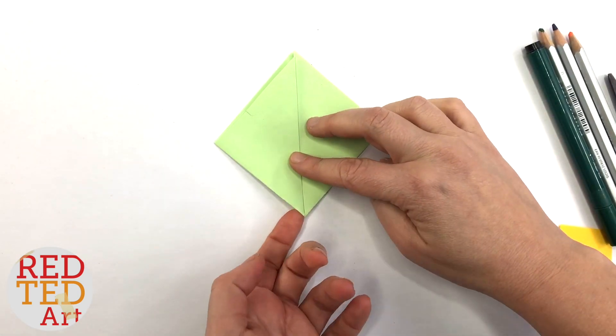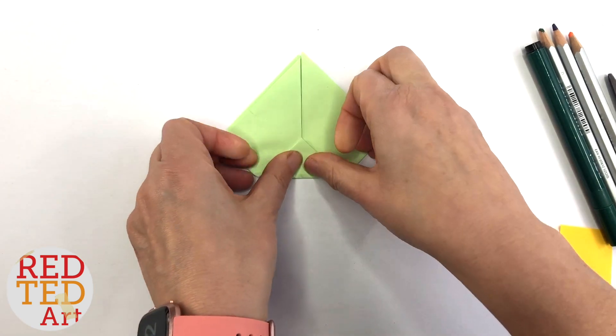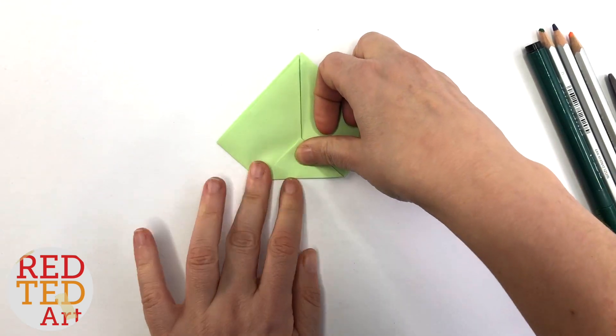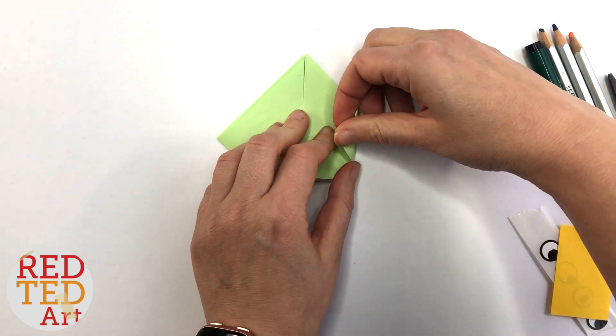Fold up the bottom. This is going to be its little stand, and we're going to glue some feet to it, but you don't have to if you don't want to. Fold in the sides—these are going to be the little wings. Doesn't have to be super neat.